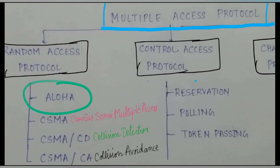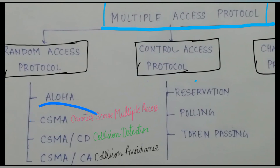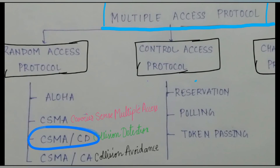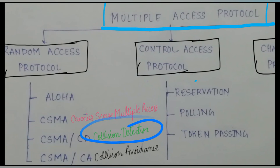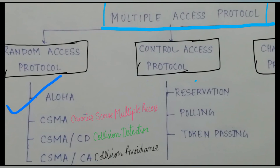Aloha I will explain in the next video. The Aloha protocol is used when you transmit a lot of frames on the same link, so to avoid collision we use all these protocols. In CSMA — carrier sense multiple access — you sense the link before transmitting.